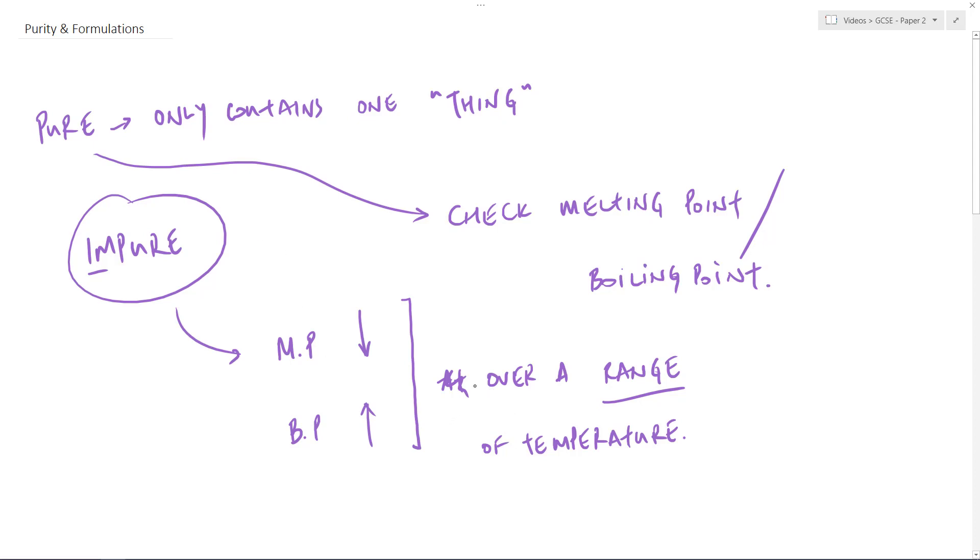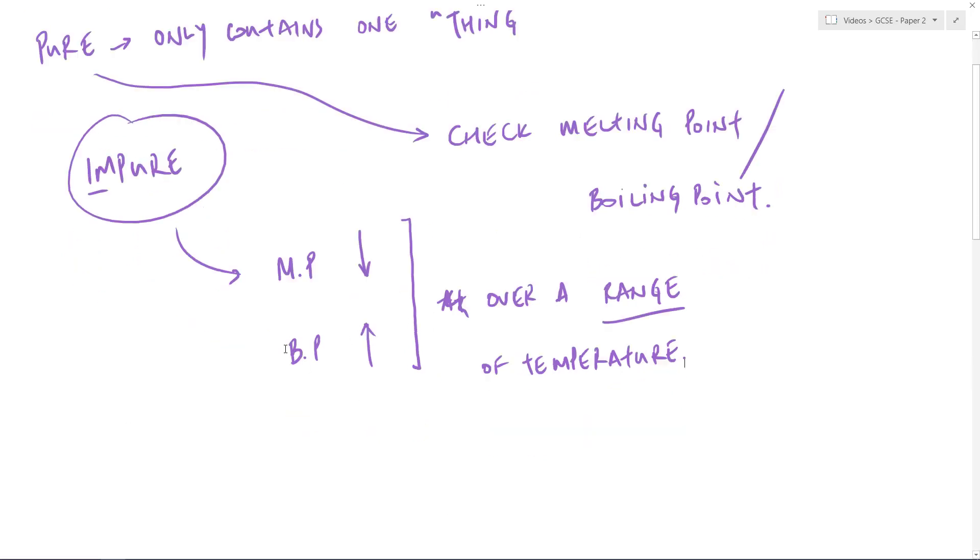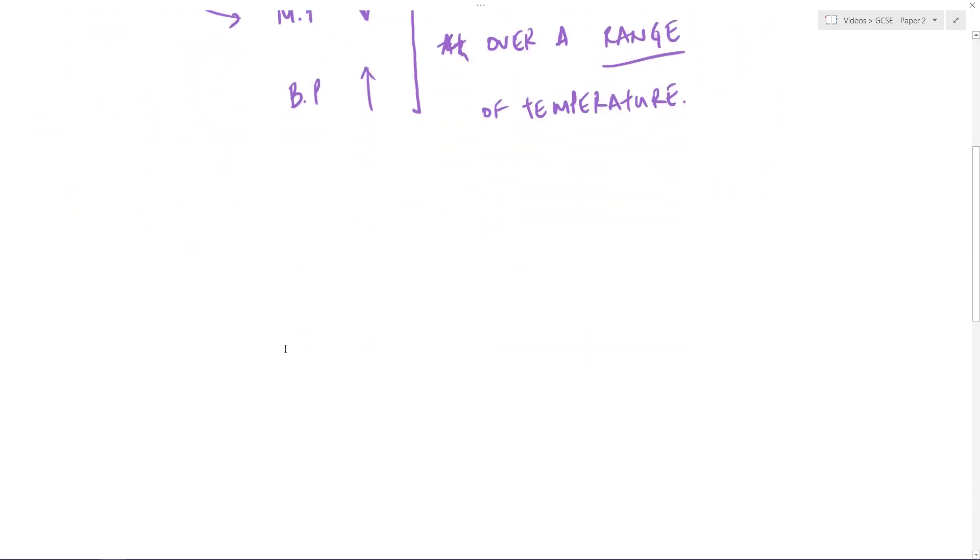Now the term formulation, we don't often want impurities. We normally want things to be pure, but sometimes we may want to create a mixture for a specific purpose. And in that case, that is what this term formulation means. So a formulation is a mixture of things, again this term, things.